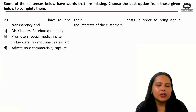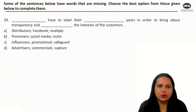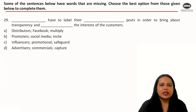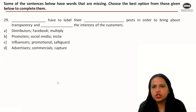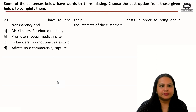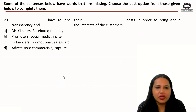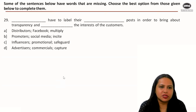In today's session we are going to solve IPM 2023 verbal section fill-in-the-blank questions. Let's read the instruction: 'Some of the sentences below have words that are missing — choose the best option from the given options to complete them.' The first question asks: do bloggers have to label their posts in order to bring transparency and dash the interest of the customers?